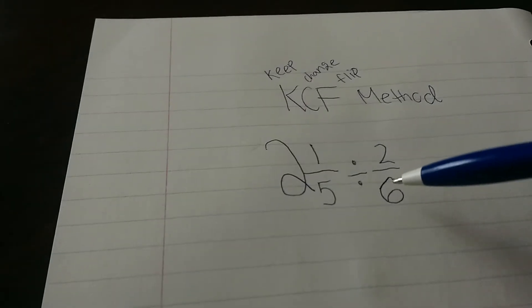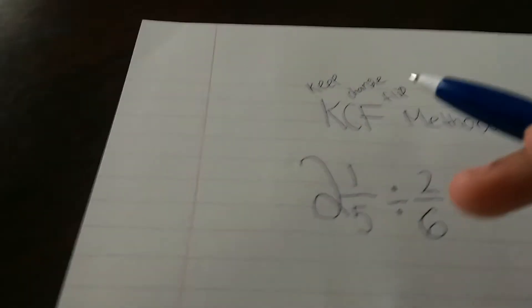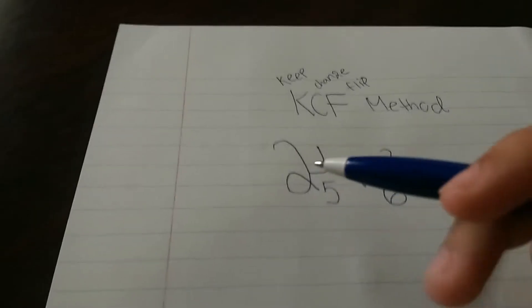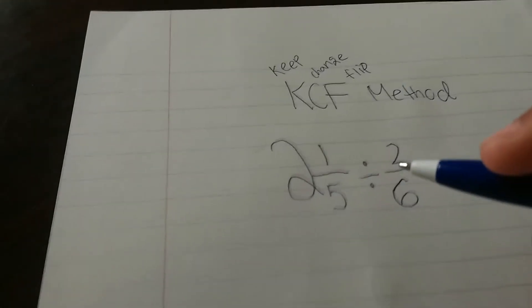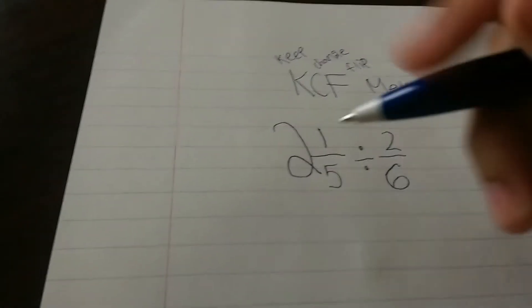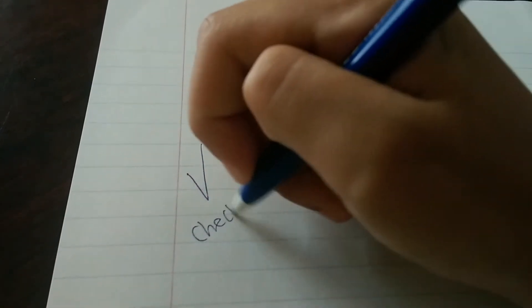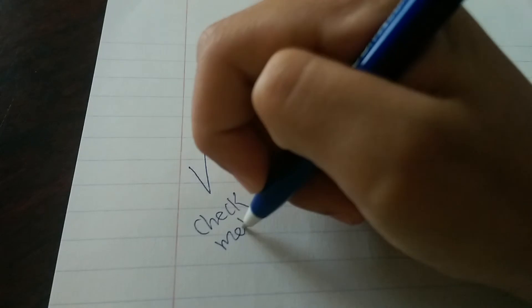and we flip the 2/6, and the 6/2, but we'll get to that later. First, what you always do, you make your mixed number into improper fraction. This is how you do it. We call this the check method.